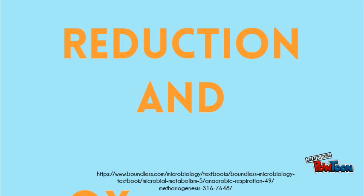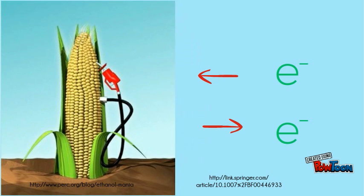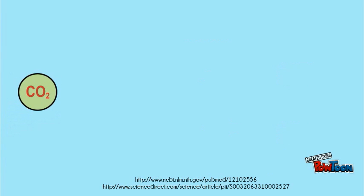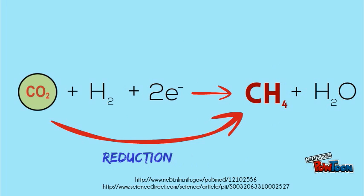The second pathway is through a specific type of redox reaction called dismutation, in which a compound is oxidized and reduced at the same time. The dismutation of ethanol results in methane production. The third and final pathway is a reduction of carbon dioxide.